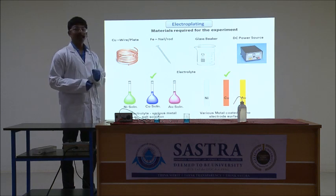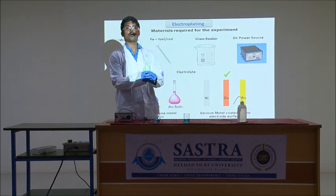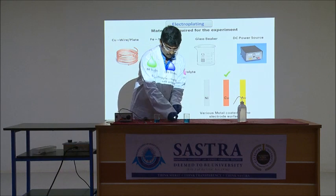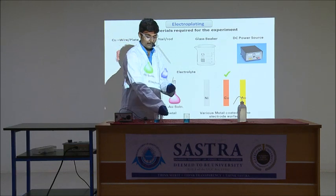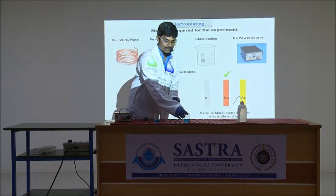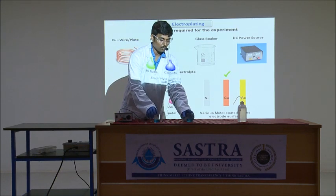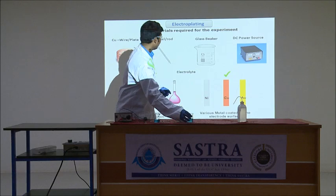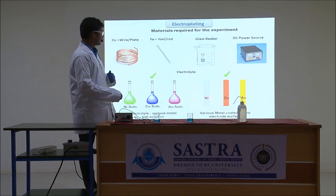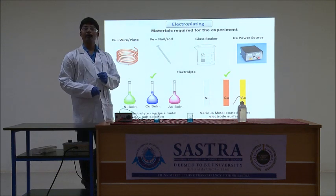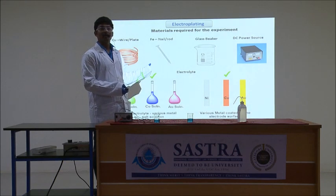Before starting the experiment, let us know what materials are required. We need copper wire or a copper plate, an iron nail or any other iron plate on which we are going to deposit the copper metal, and sandpaper as well as a power source to supply electricity. Very importantly, we need the electrolyte for the system. Since we are going to deposit copper on the surface of an iron nail, we have to use an aqueous solution of copper salt — here we are going to use copper sulfate as the electrolyte.